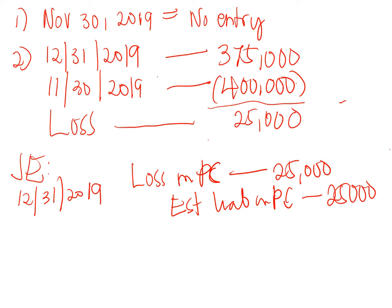Since the value of the asset declined, this will be recognized as a loss on purchase commitments. The journal entry on December 31, 2019 is: debit Loss on Purchase Commitments 25,000, and credit Estimated Liability on Purchase Commitments 25,000. When the value of purchase commitments declines, we recognize a loss because the purchase is the asset part of inventory.